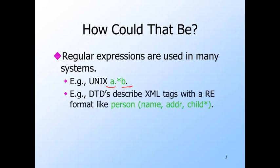Many Unix text processing commands use a variety of regular expressions. This expression describes a line of text that has a letter A followed by any number of characters, followed by the letter B. For a more modern example, the XML document markup language invites us to describe the structure of documents by a DTD, or document type definition. A person element consists of a name element, followed by an address element, followed by any number of child elements.